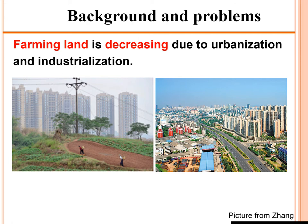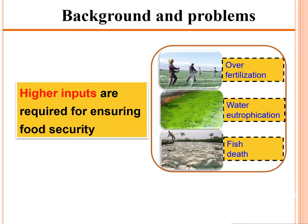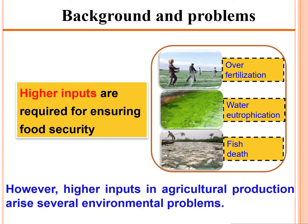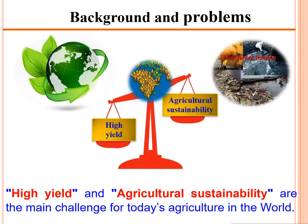These pictures show that tall buildings, factories, and roads are replacing farming land. Farming land is decreasing due to urbanization and industrialization. As farming land decreases while population increases, to ensure food security we need to apply high inputs. However, high inputs in agriculture cause environmental problems such as water eutrophication and fish death. Therefore, obtaining higher crop yields while maintaining agricultural sustainability is the main challenge for today's agriculture.